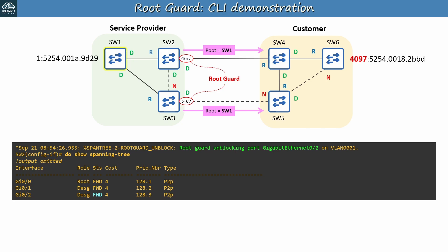Before we move on to summarize this video, I just want to clarify where you should configure root guard. SW1, SW2, and SW3 belong to a service provider, and they want to ensure SW1 remains the root bridge. A customer's switch shouldn't disrupt the STP topology by becoming the root bridge. Therefore, root guard is configured on the ports connecting to customer switches, like SW2 G0/2 and SW3 G0/2. However, note that you shouldn't always configure root guard on every port connected to another network. For example, while the customer switches connect to the service provider, the customer shouldn't configure root guard on their own ports. If the customer configures root guard on SW4 and SW5 ports that connect to the provider, those ports will just be disabled if they receive superior BPDUs, blocking those links. And there's no point in connecting to a service provider if you can't communicate over their network.